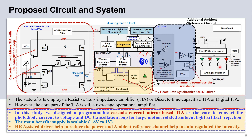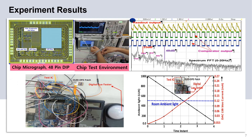In the third part, we used an additional ambient reference channel to control the intensity of the OLED driver. This extra reference channel helps to degenerate the resistance of the current DAC so that in the case of high ambient light intensity, the LED intensity will go low automatically by degenerating the resistance of the current mode DAC.